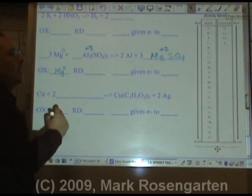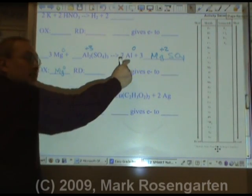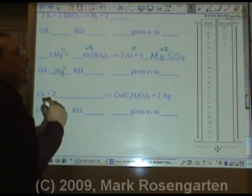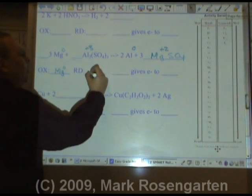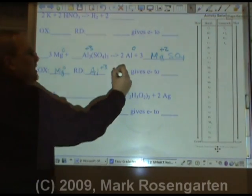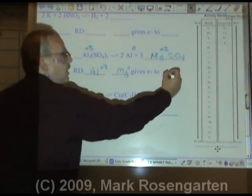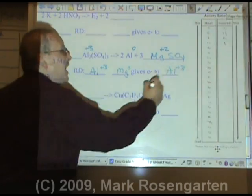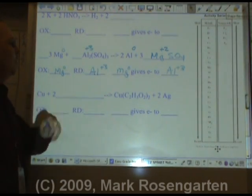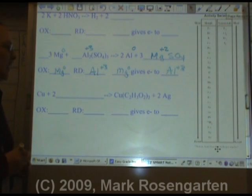Aluminum started as plus three. It ends as zero because it's not in a compound, so it has no charge. It gained three electrons to do this. Therefore, aluminum plus three is reduced, which means the magnesium will give electrons to aluminum. In a battery, the magnesium would be the negative end of the battery, and the aluminum would be in the positive end of the battery.